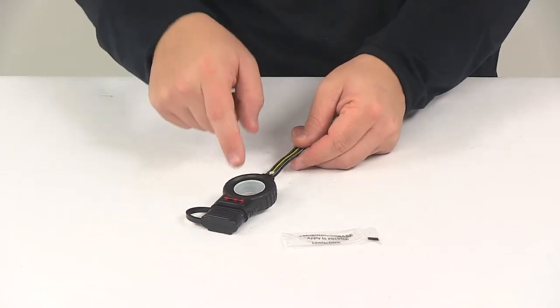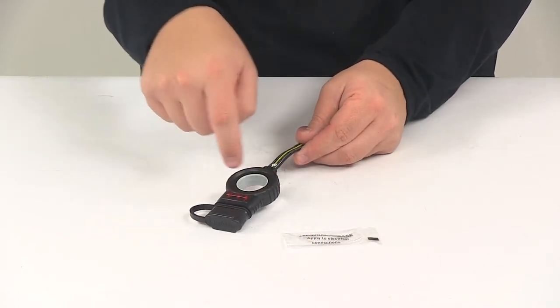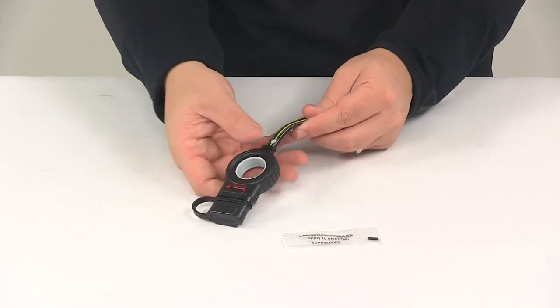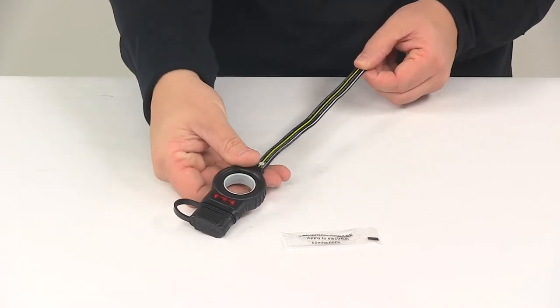When it comes to the ring diameter, the inner diameter is going to be about one inch. Outer diameter is going to be about one and seven eighths of an inch. Wiring harness length is about twelve inches long.